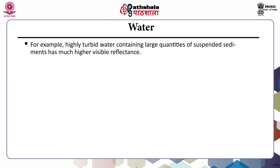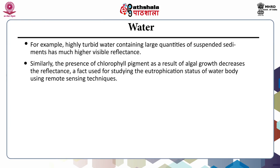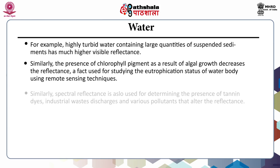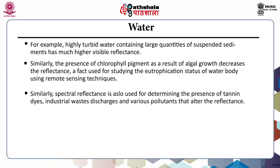For example, highly turbid water contains large quantities of suspended sediments, which result in much higher visible reflectance. Similarly, the presence of chlorophyll pigment as a result of algal growth decreases the reflectance — an effect used for studying the eutrophication status of a water body using remote sensing techniques. Spectral reflectance is also used for determining the presence of tannin dyes, industrial waste discharges and various pollutants that alter the reflectance.